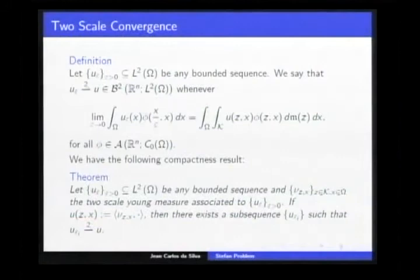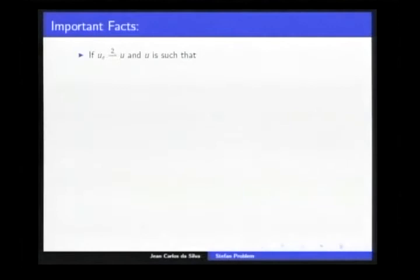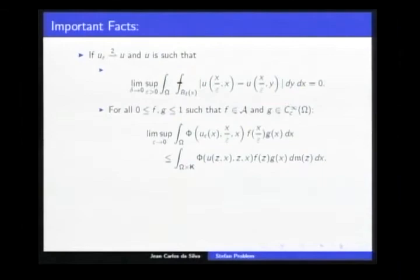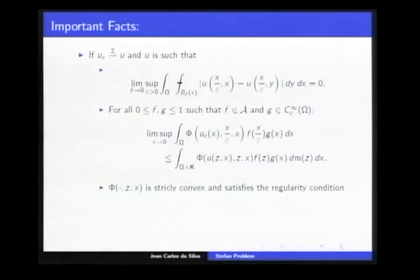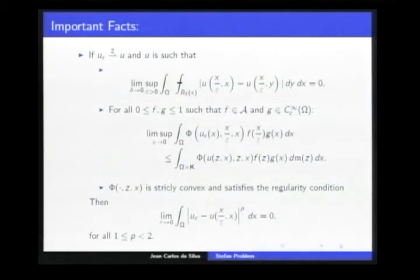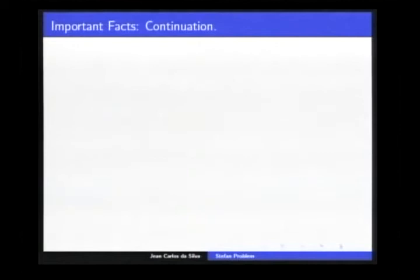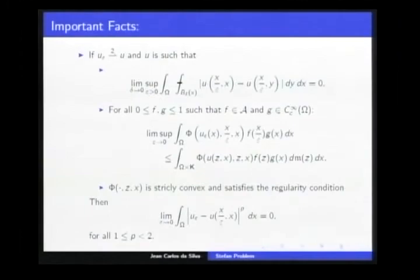If you combine this inequality together with other important facts — specifically, if a function satisfies this inequality condition and a similar inequality holds for an appropriate strictly convex function psi satisfying that condition — then we have strong convergence. Putting these inequalities together gives us this strong convergence result.